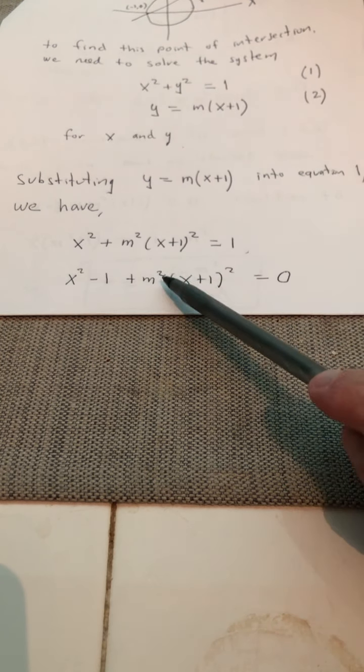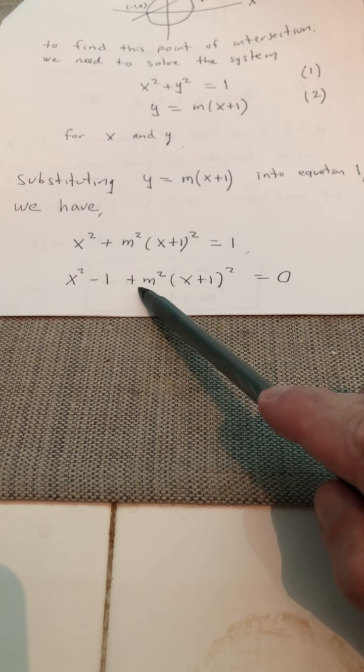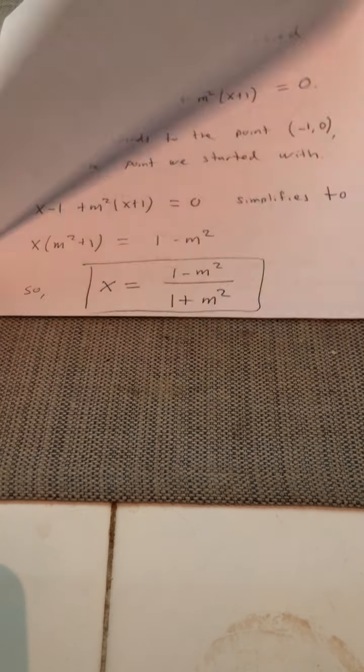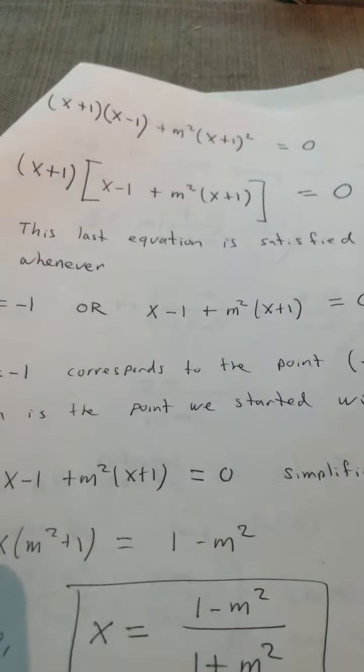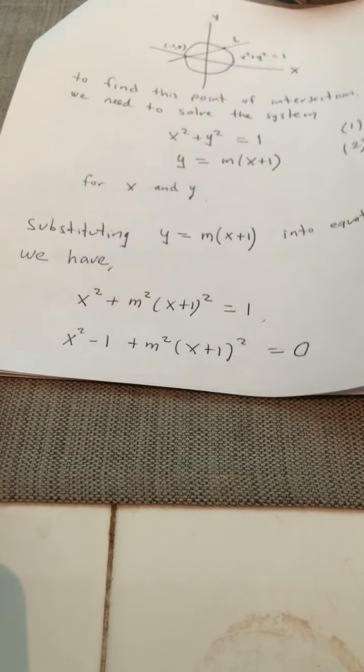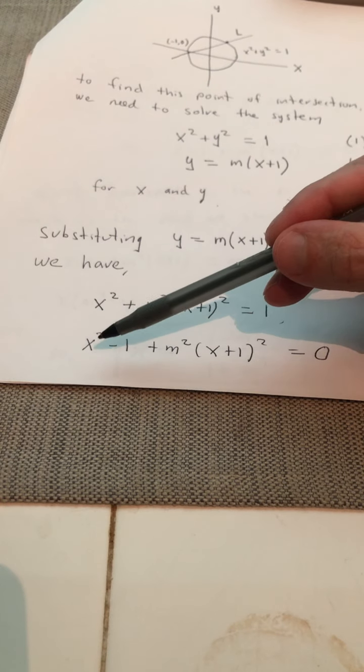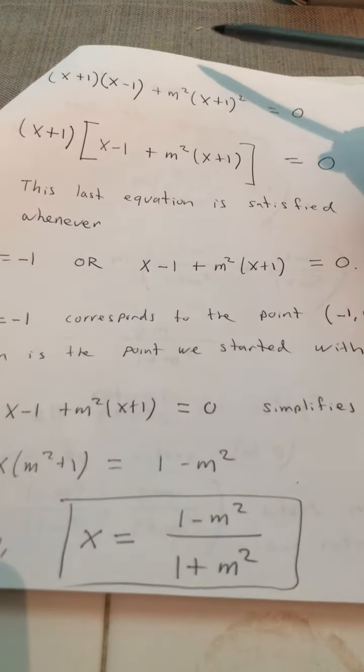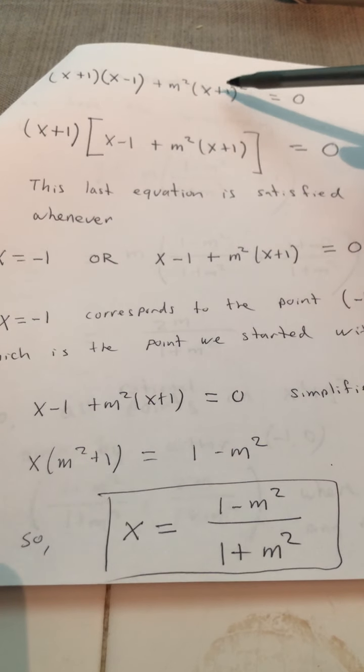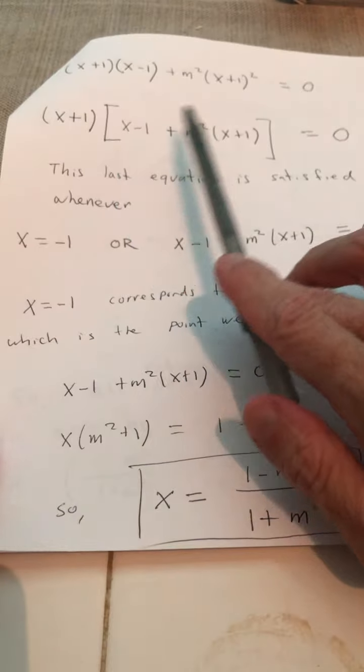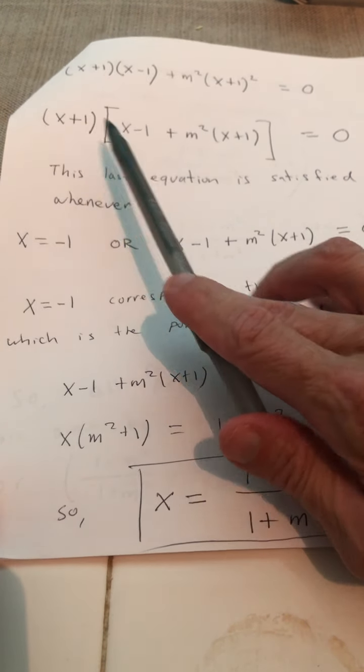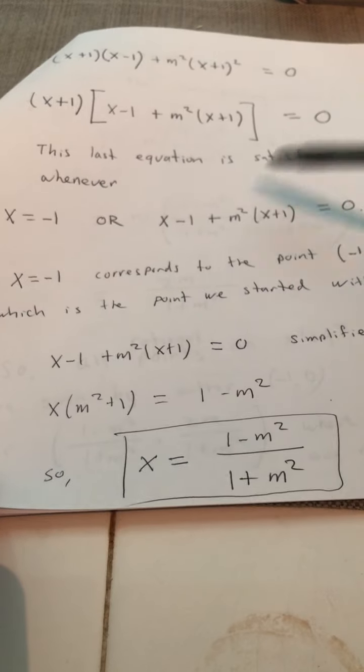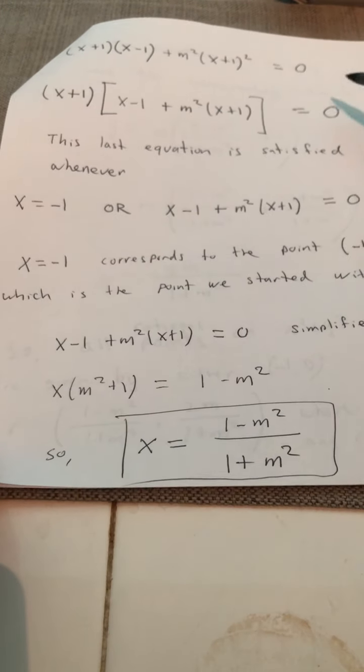So if I subtract one from both sides, I get x squared minus one plus m squared times x plus one squared. So notice that I can factor. You see, x squared minus one, that's a difference of squares. x squared minus one can be written as x plus one times x minus one. And then we still have plus m squared times x plus one squared. Common binomial here is x plus one. So factoring out x plus one, I get x minus one plus m squared times x plus one.